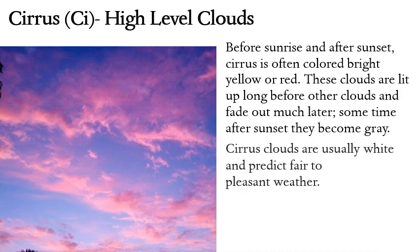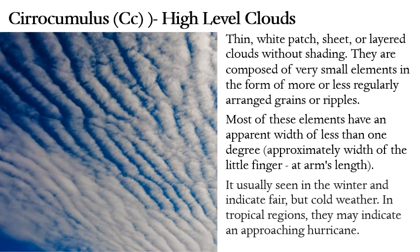Next is cirrocumulus cloud, which is a variant combining cirrus and cumulus characteristics. A cumulus cloud has a rounded appearance, so when you see rounded clouds at high level, that is a cirrocumulus cloud. In the picture, you can see a layered cloud with rounded structures about the width of a finger — that is a cirrocumulus cloud.